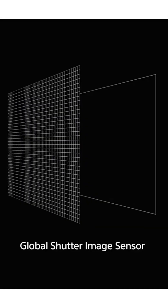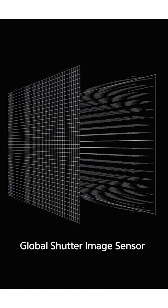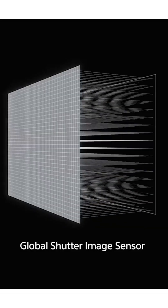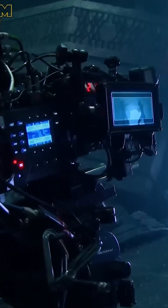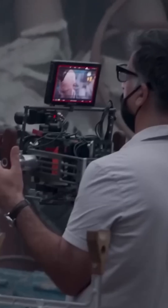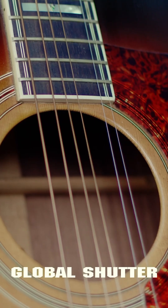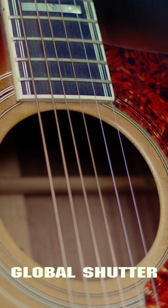Global shutter, on the other hand, captures the entire image at once. Every pixel on the sensor is exposed to light simultaneously. This quality is especially important for action scenes, VFX work, and any situation where a clean moving image is necessary.